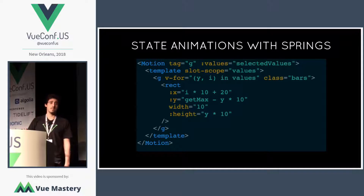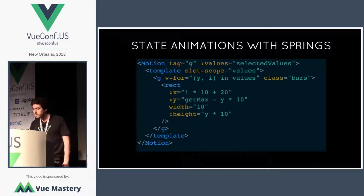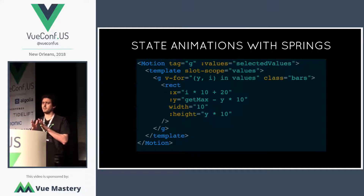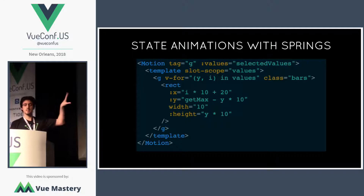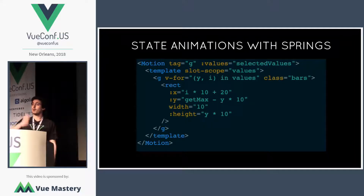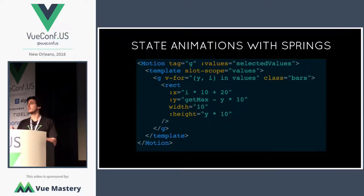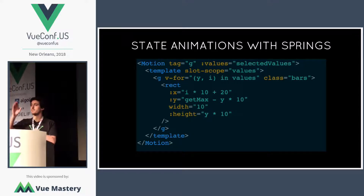You only have to worry about what the actual value is at the moment in your application, so you can do classic Vue things like this.selectedValues equals something else. In this scenario, selectedValues is an array. In this real-world example, it's rendering a graph with bar plots, and the selected values is just the dataset you're looking at. If you change the dataset, motion will make sure the values change and the bar plot animates.